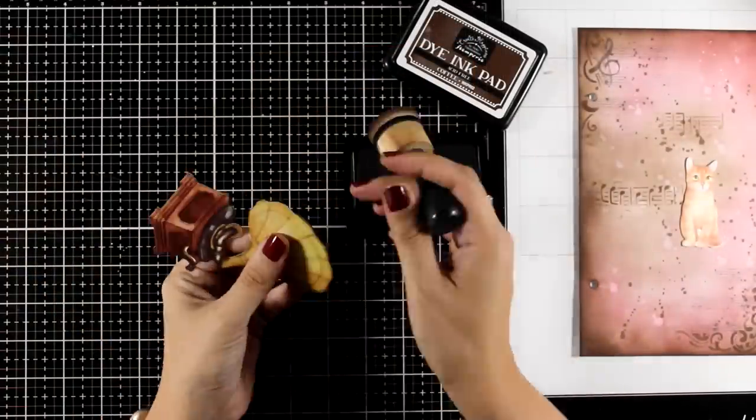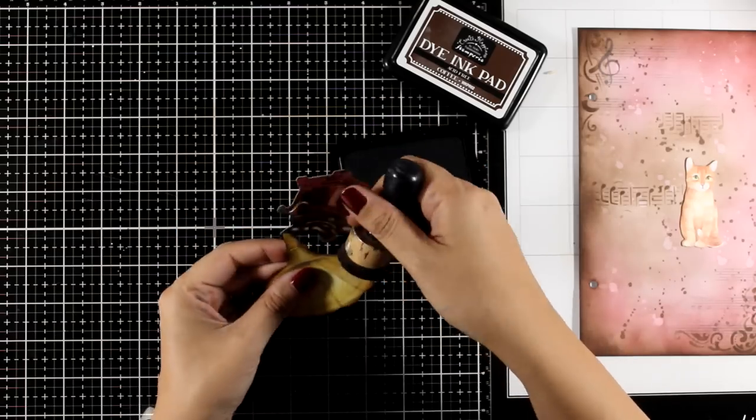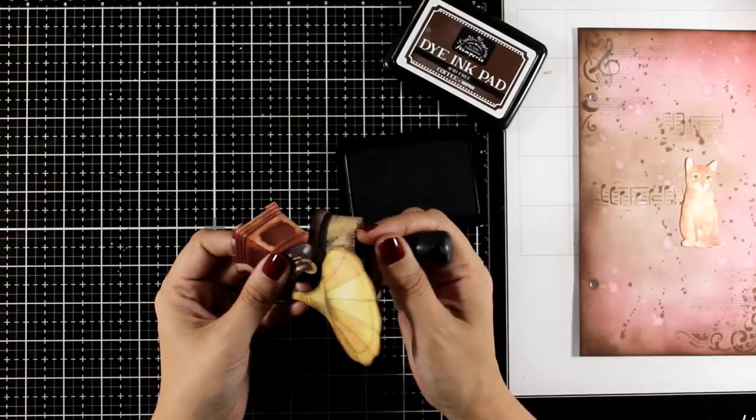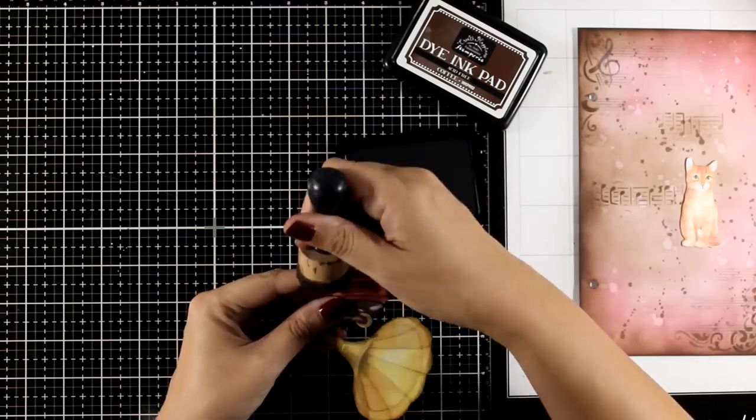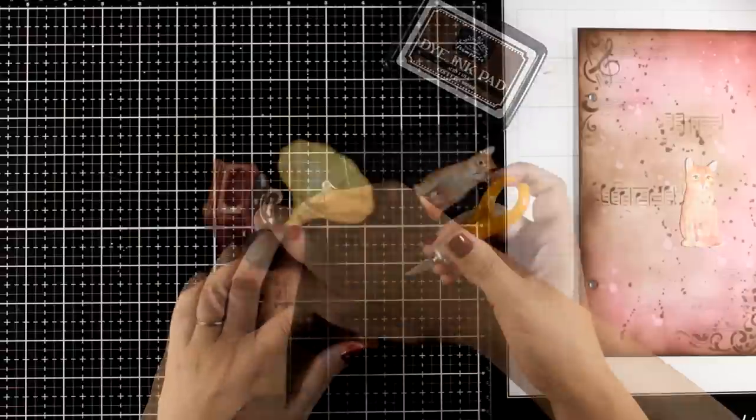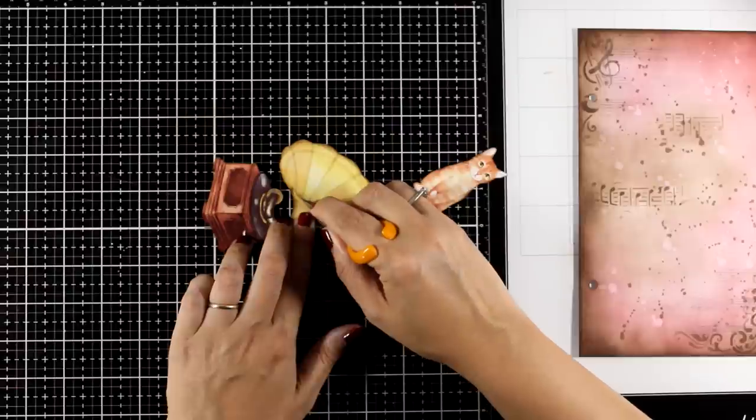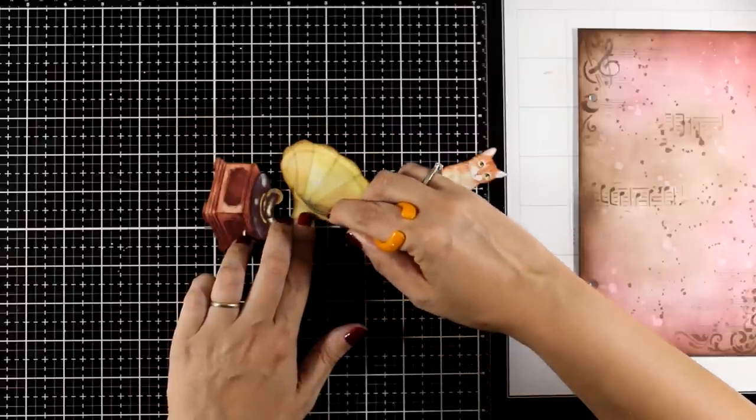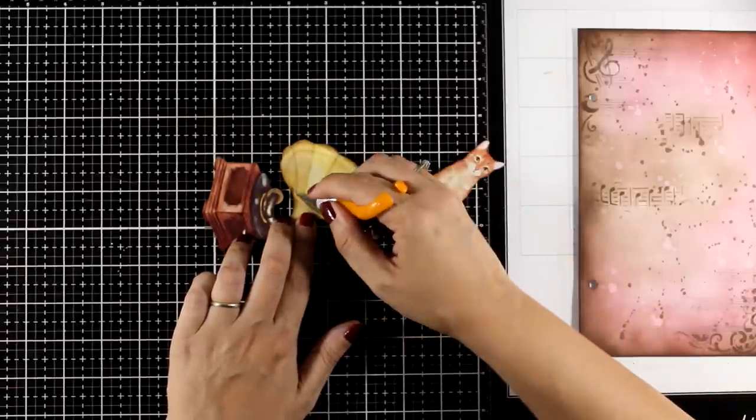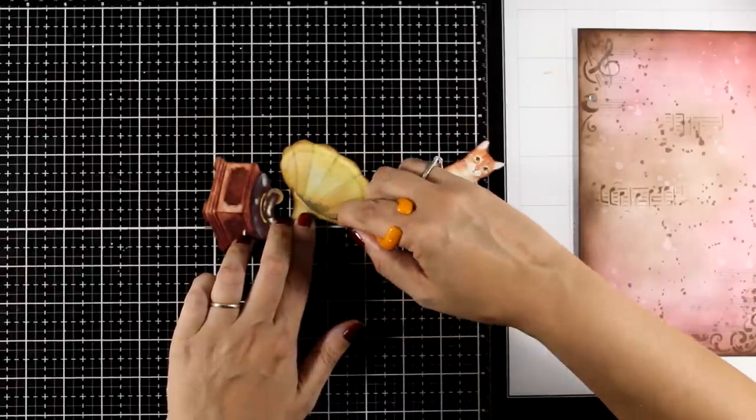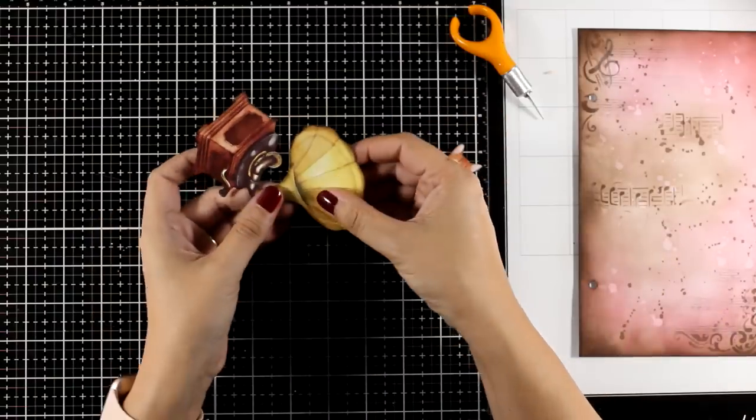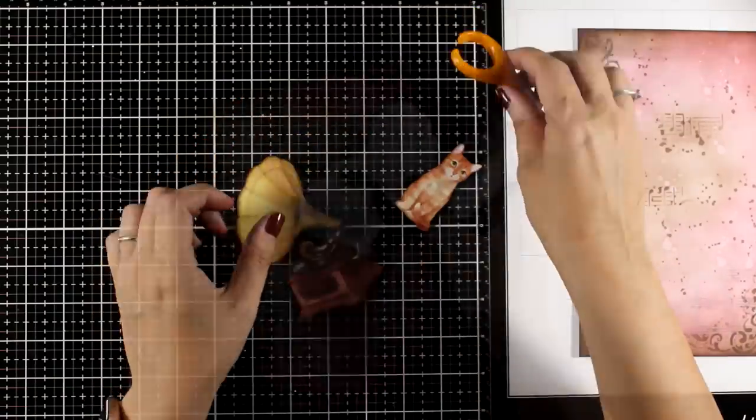I'm inking up the edges just to get rid of that white edge. I do that on pretty much every ephemera that I use. And then with my craft knife I'm going to go around that line and create a little slit. The idea is to be able to tuck inside flowers and leaves from the ephemera pack as if they are coming from inside the gramophone.